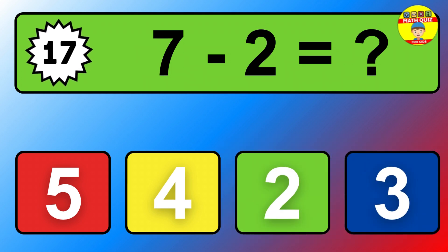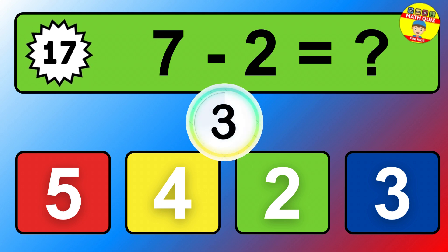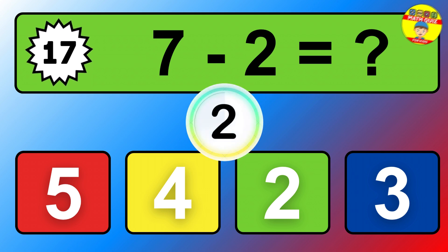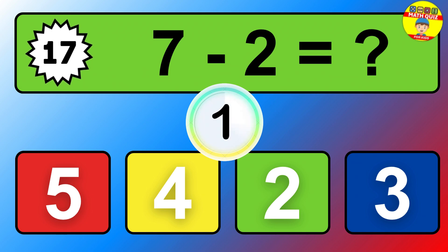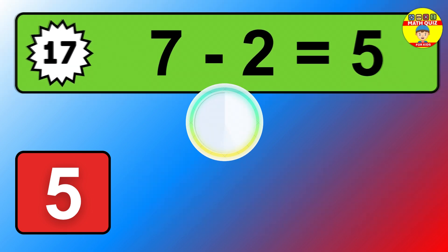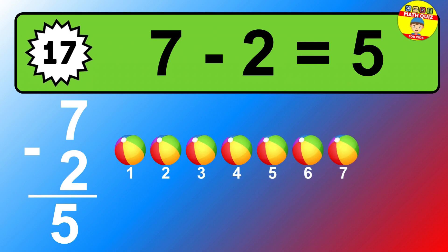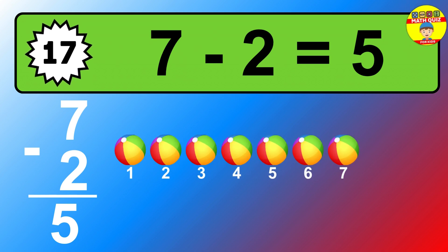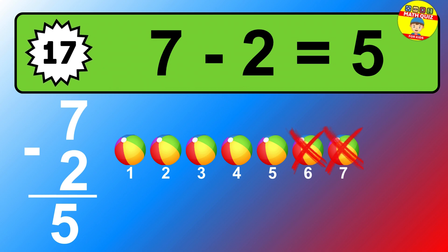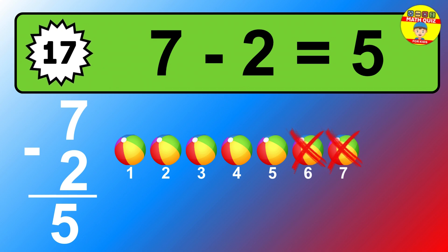Question seventeen: seven minus two equals what? So the answer is seven minus two is five. Let's count it. One, two, three, four, five.